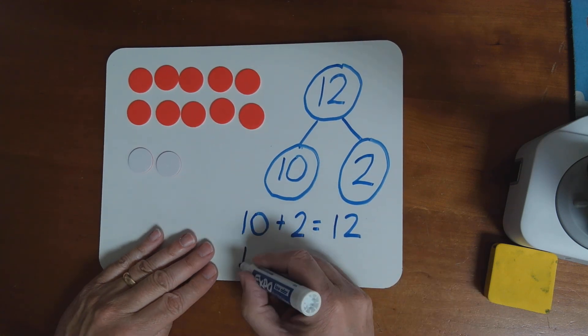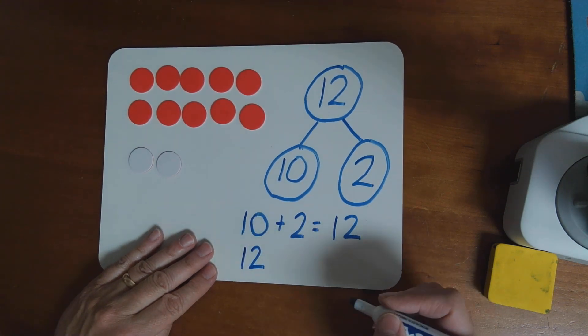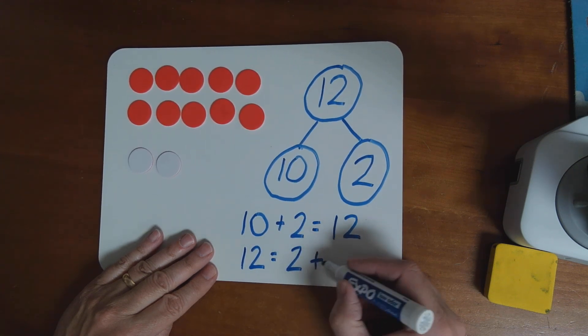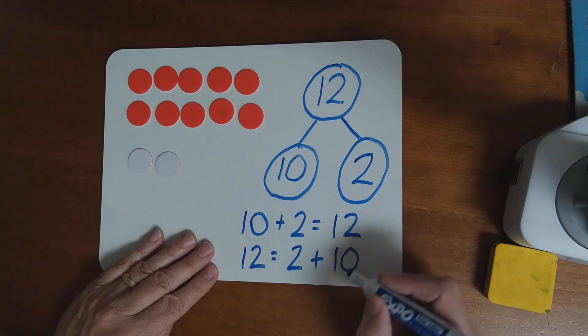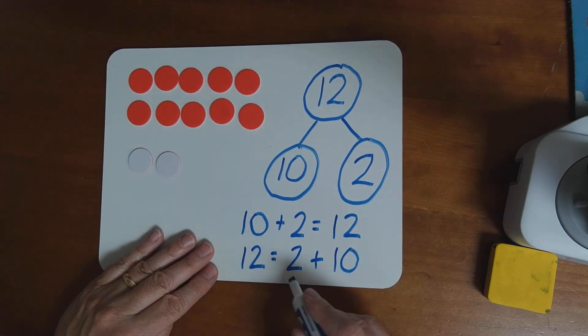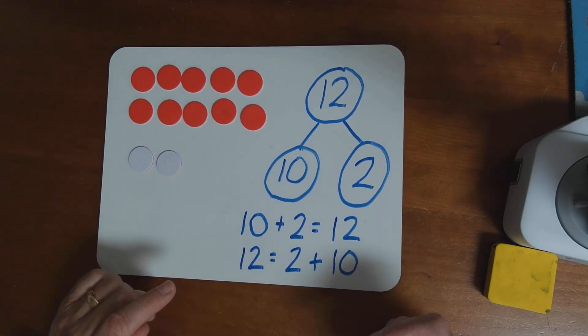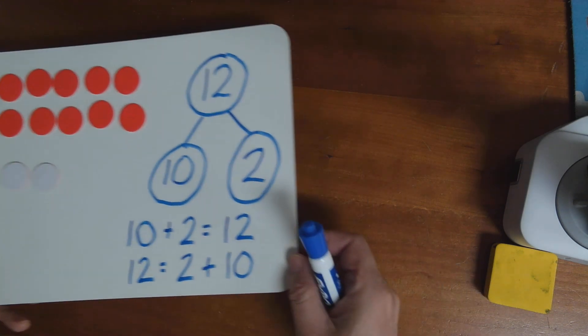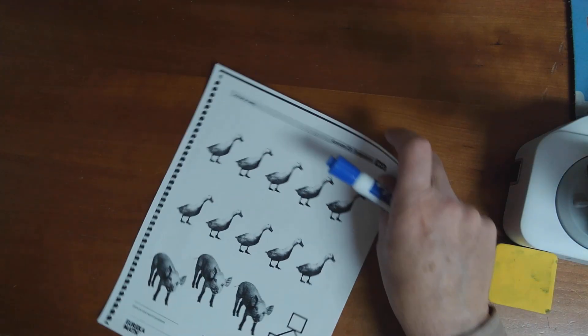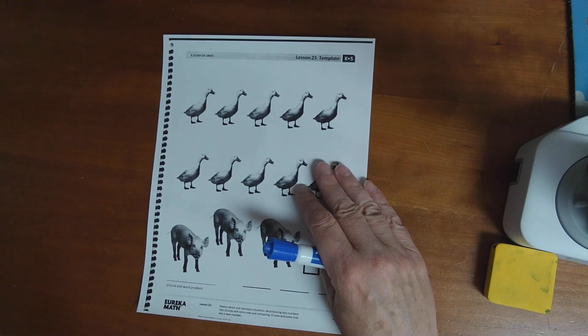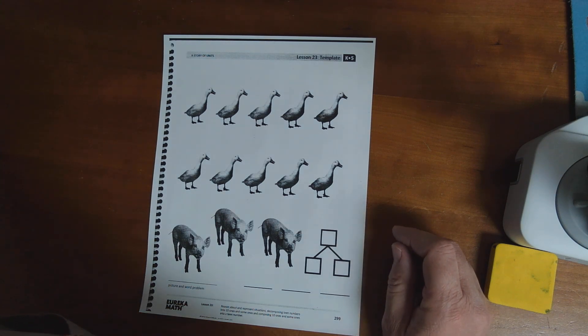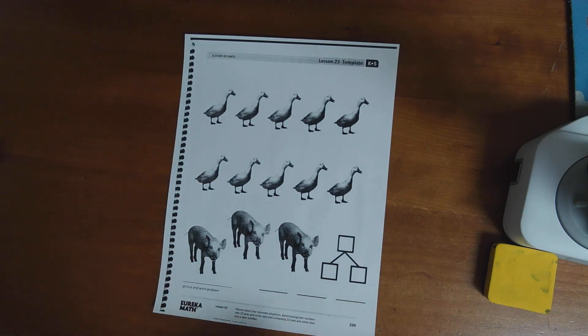Now, the other way I can do my number sentence is if I put the whole first, then I have to put the equals sign. Then I can do this part. It doesn't matter which part I put first, right? It's still the same. 12 equals 2 plus 12. Okay.